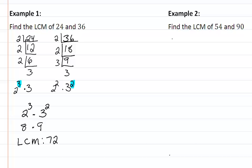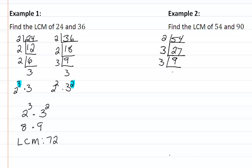For example two, we are finding the LCM of fifty-four and ninety. Starting with fifty-four: fifty-four is divisible by two, leaving twenty-seven; twenty-seven is divisible by three, leaving nine; nine is divisible by three, leaving three. So the prime factorization of fifty-four is two times three to the third power.